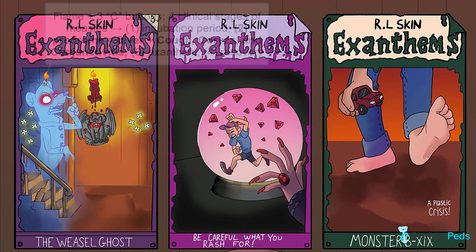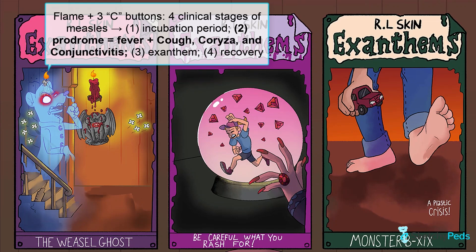The second stage is known as the prodrome and is characterized by fever, depicted by the candle flame behind the ghost weasel's head, and the three C's: cough, coryza, and conjunctivitis. You'll see that our ghost weasel has three C-shaped buttons on his robe, and that he's coughing, has a drip of snot coming from his nose, and has glowing red eyes. He's not snarling — he's sneezing.